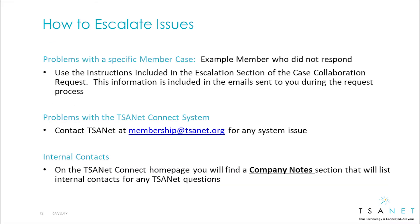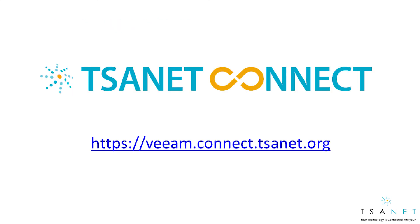Three types of issues may arrive that you need to escalate. The first is a problem with a specific case — use the escalation instructions that are included in all emails. For any type of system issue, contact TSAnet. On the TSAnet Connect home page, you also find a company notes section that will include internal contacts that can be used. Access TSAnet Connect now at your company login page.